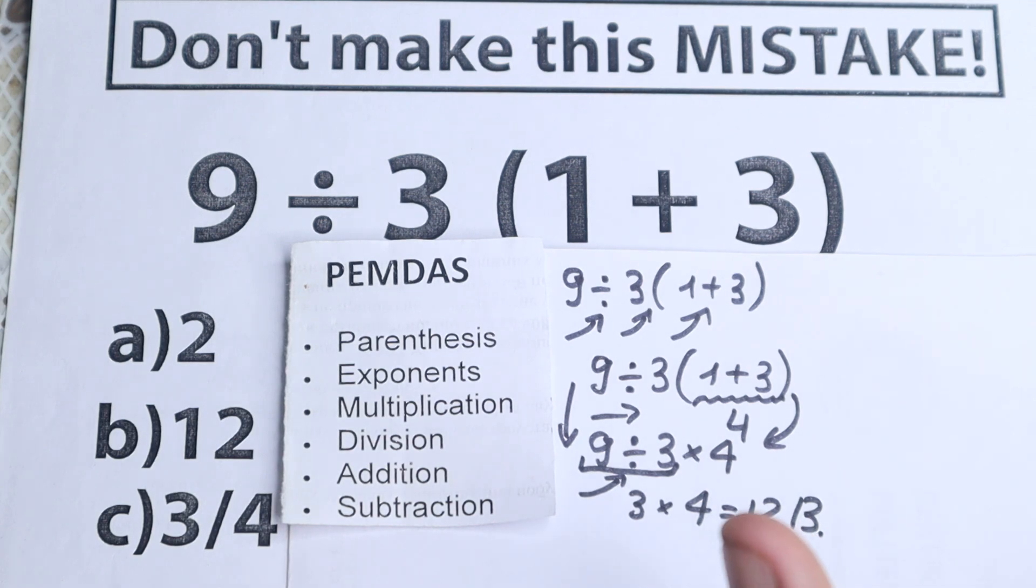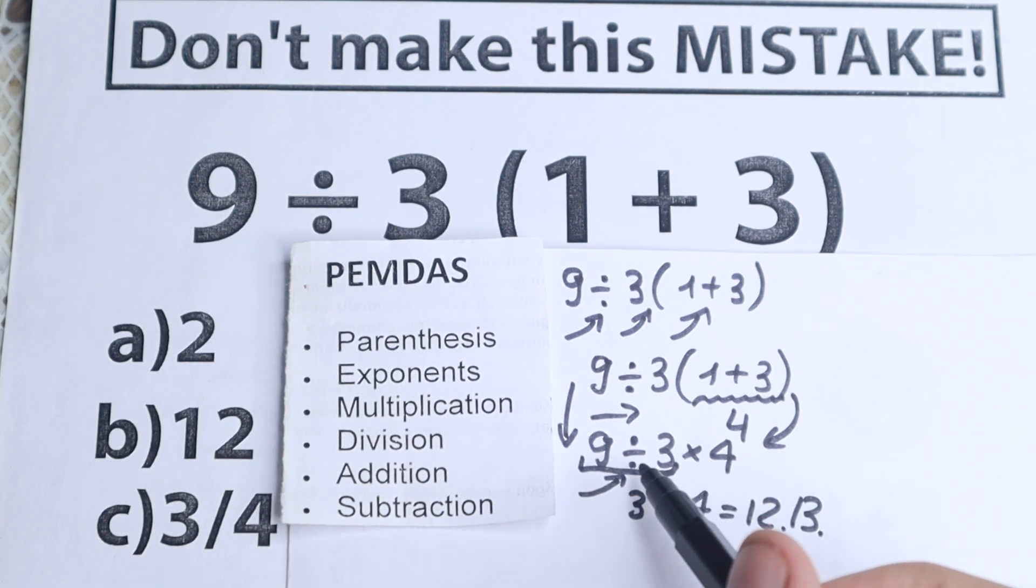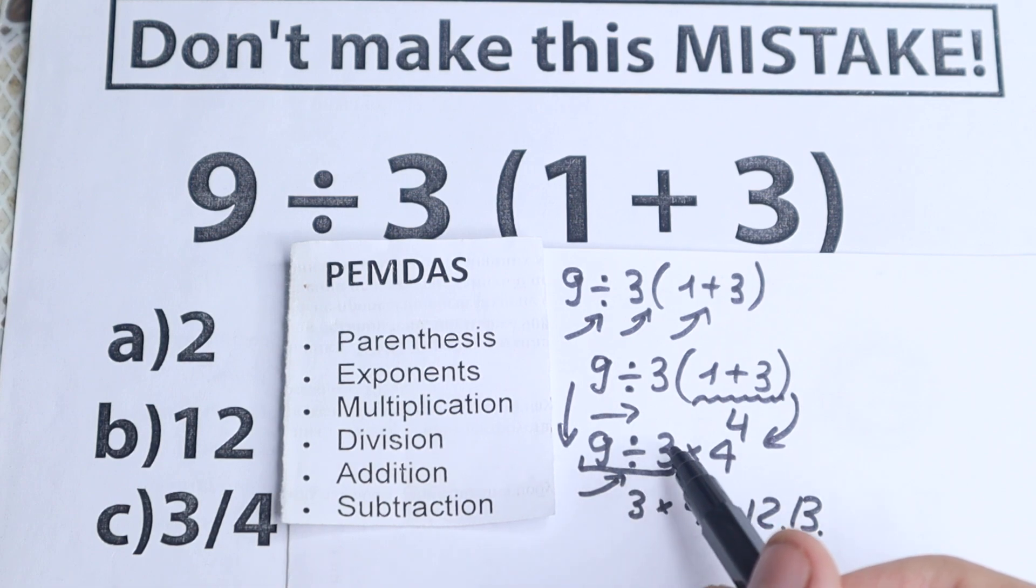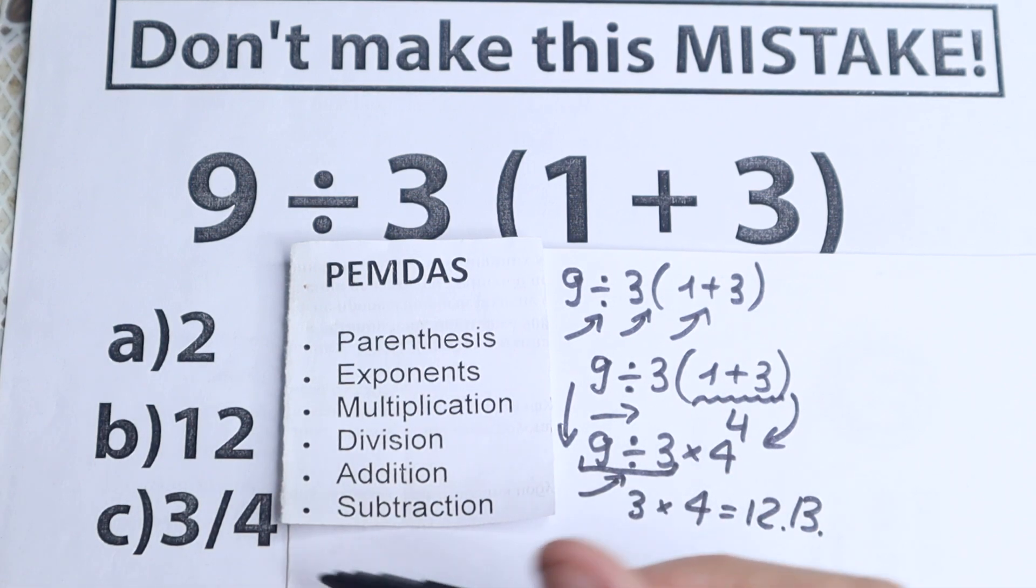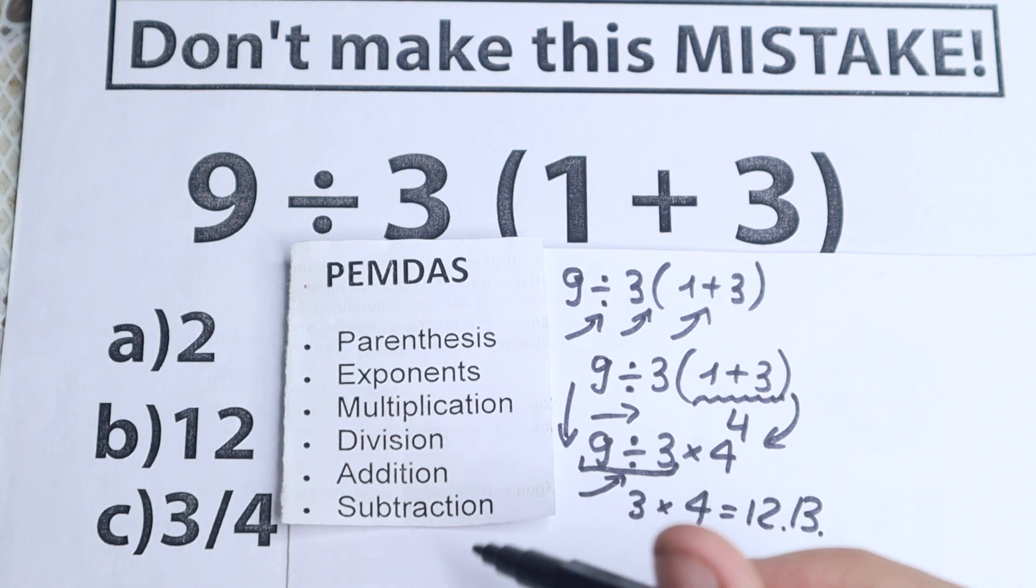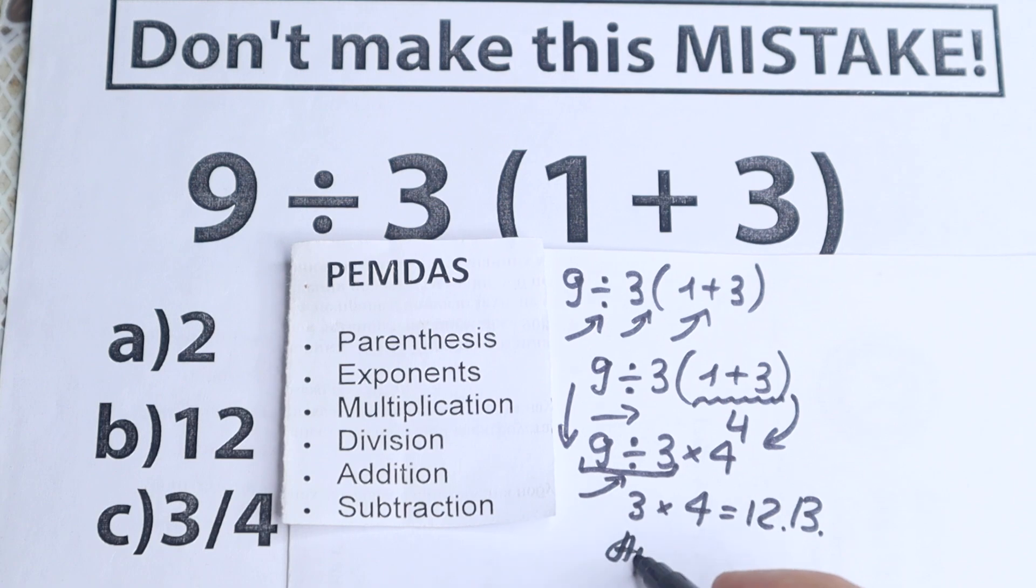But a lot of students solve it in another way. They multiply first. So 3 times 4 equals 12, and 9 divided by 12 equals 3 over 4, which is option C. As you can see, there are tricky options here, but the correct solution to this problem is option B. The answer is 12.